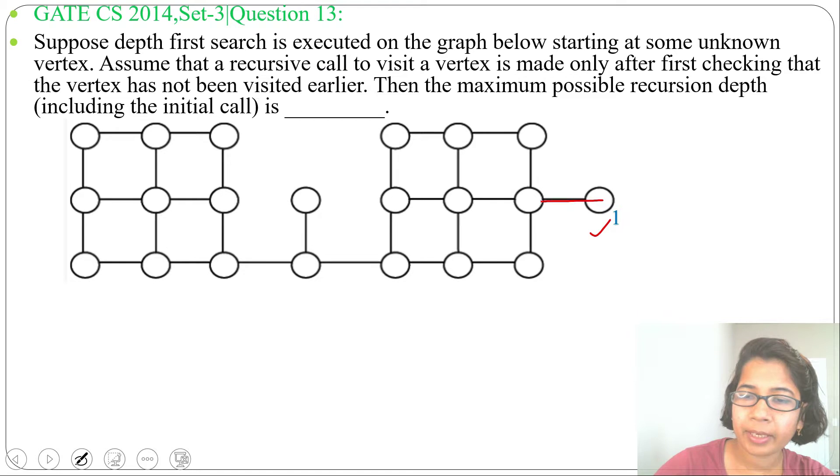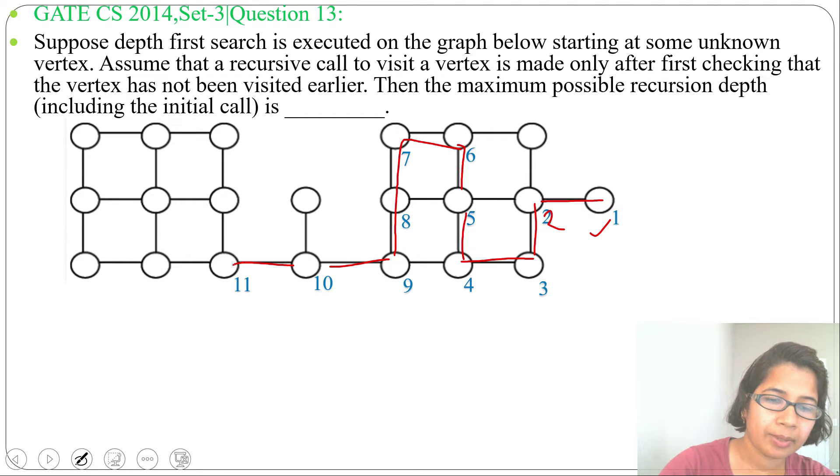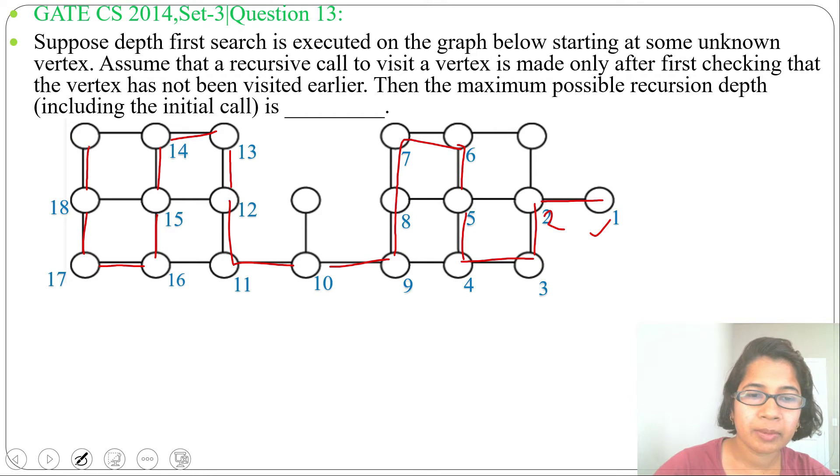After that I can visit its adjacent, here it is 2. Next I will visit this adjacent, so here it will be 3, next its adjacent 4, next its adjacent 5, 6, then 7, 8, 9, then 10, 11, 12, 13, 14, 15, 16, 17, 18, 19. So we found here maximum recursion depth is 19.